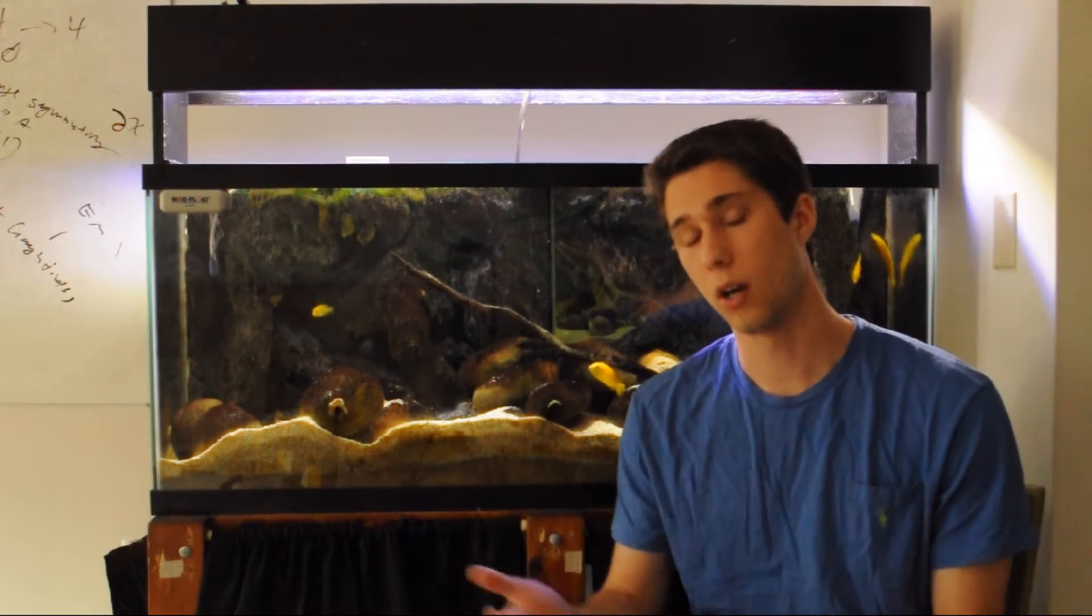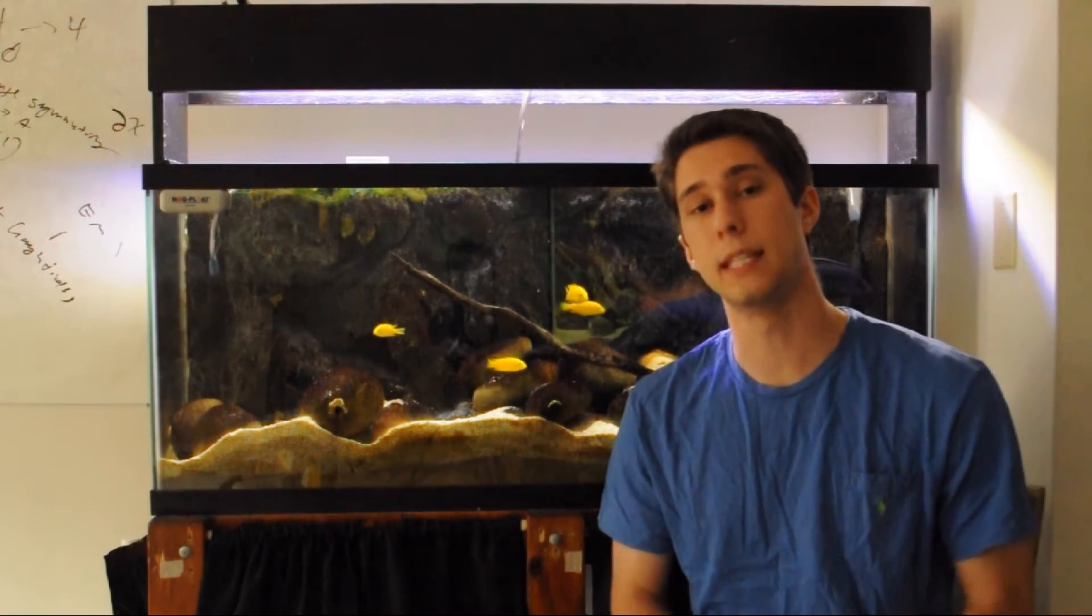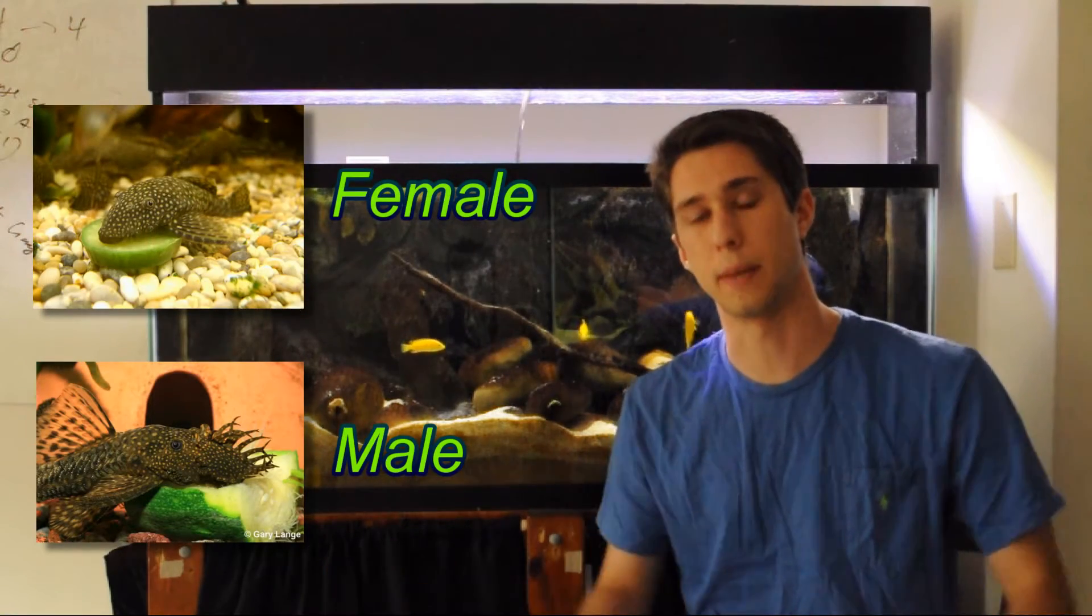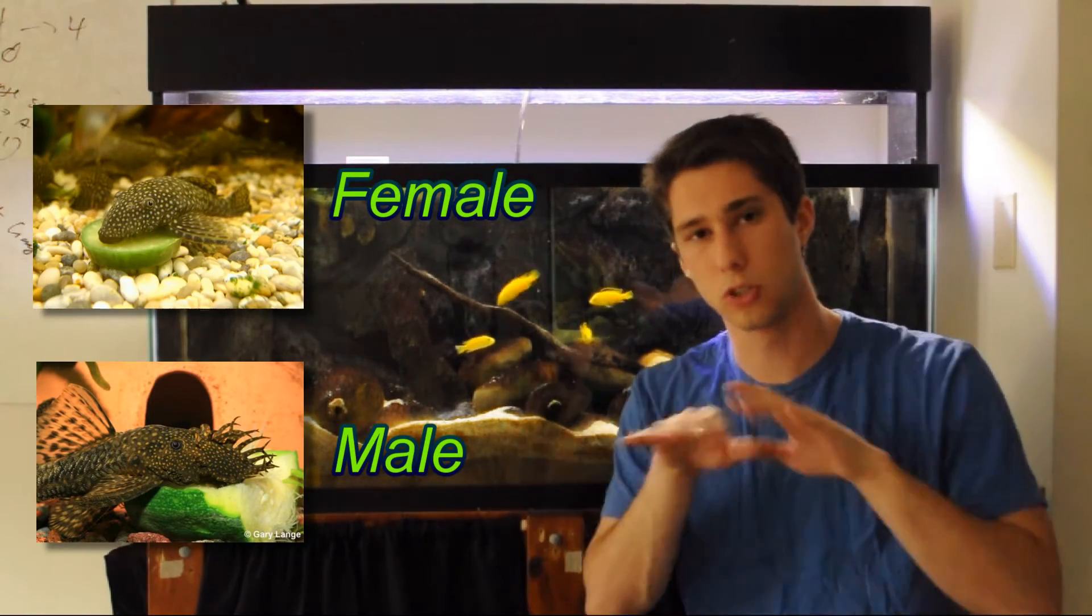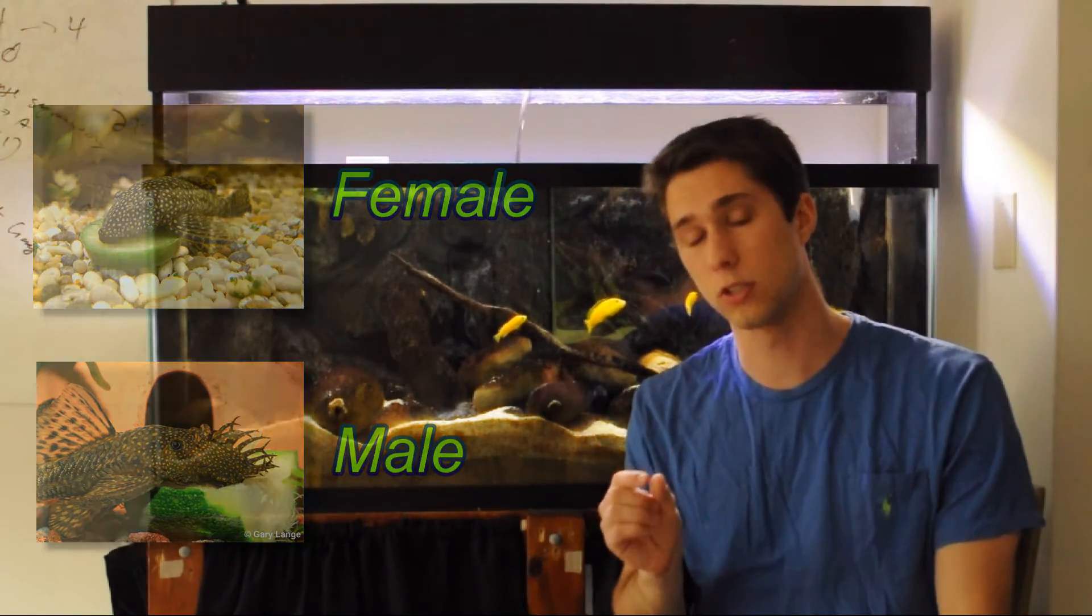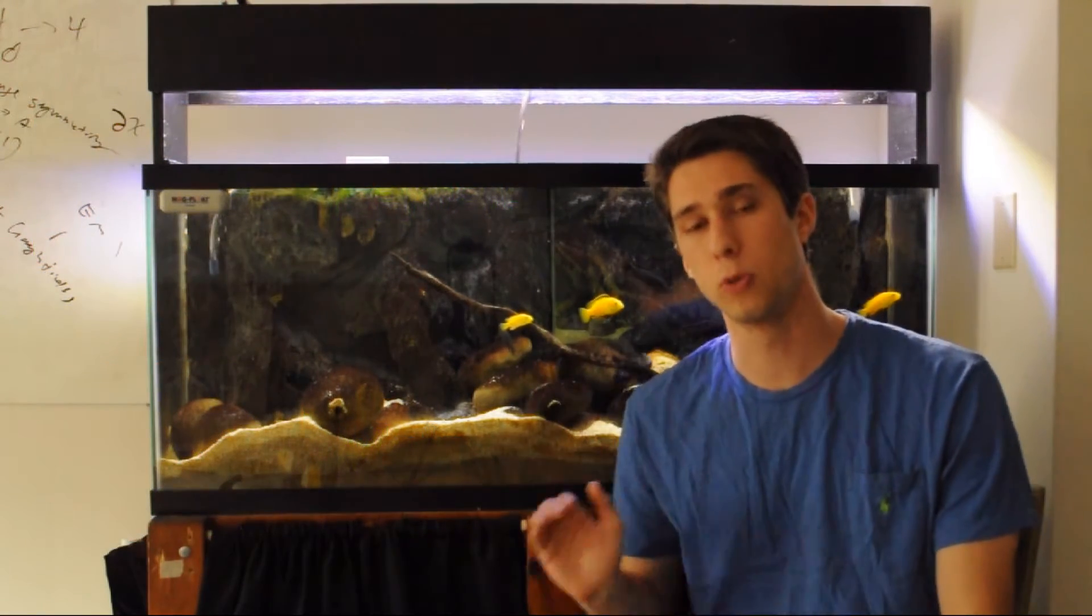For number two on the list we have the Ancistrus or also more commonly known as the bristlenose pleco. Now the reason it's called the bristlenose pleco is the males have bristles. What a concept. So the males have these bristles or whiskers coming off of them. The females have either smaller bristles, very small bristles or kind of a smooth look to their face.